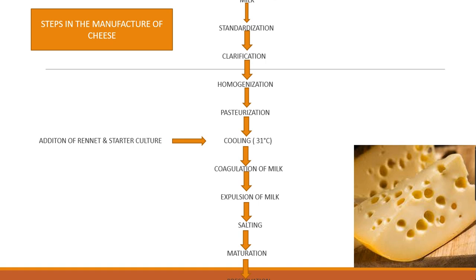Cheese is generally made from cow, sheep, goat, or buffalo milk produced by healthy animals. The milk is first standardized — its fat composition is adjusted by adding cream or removing fat, or by adding skim milk or non-fat milk solids. After standardization, clarification is done: removal of extraneous matter by centrifugal force in a clarifier.